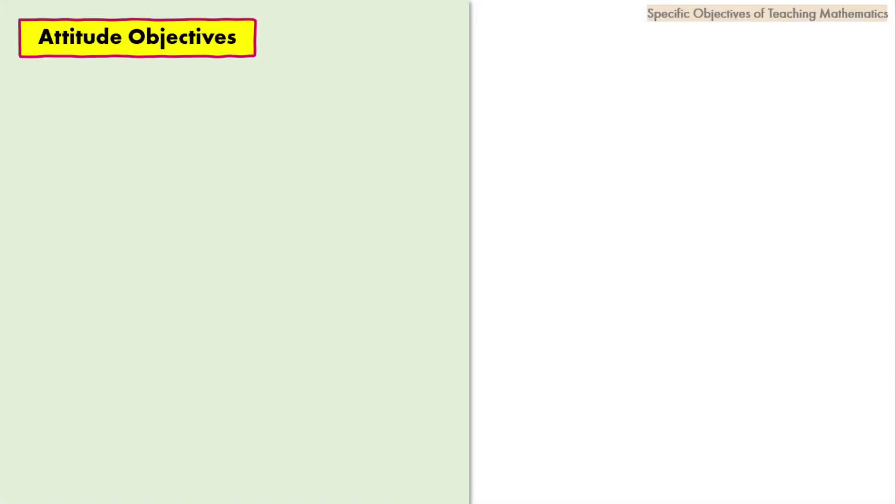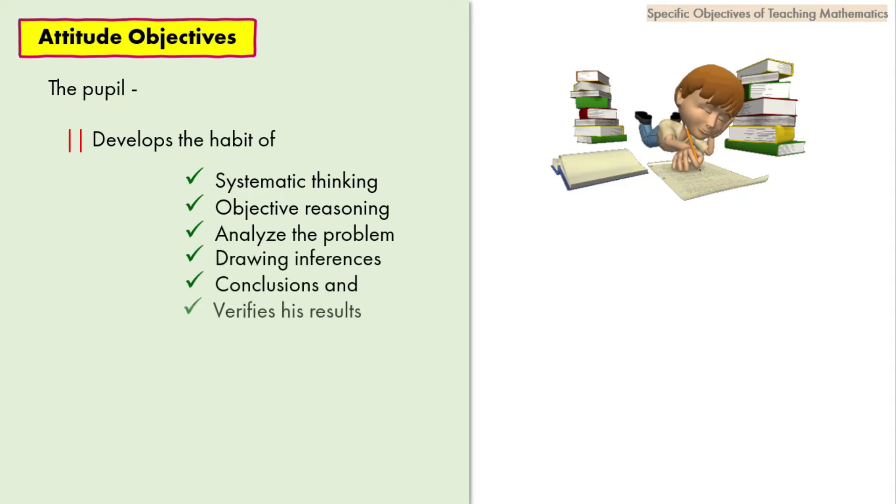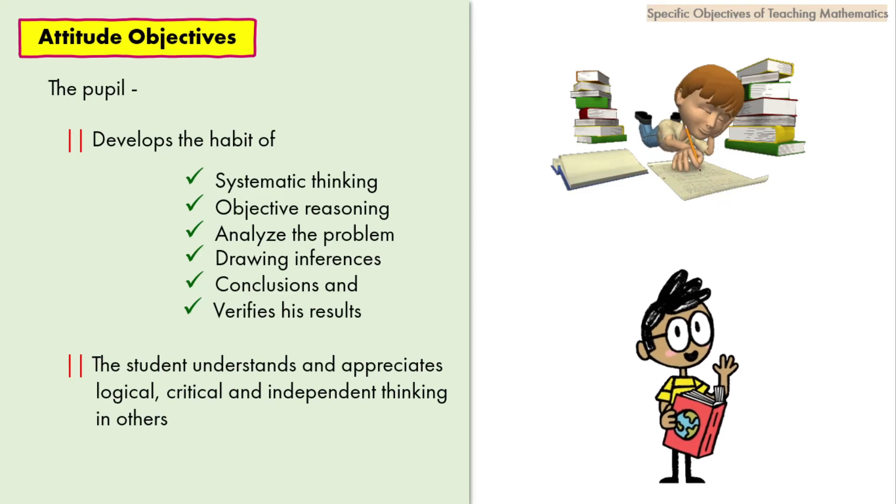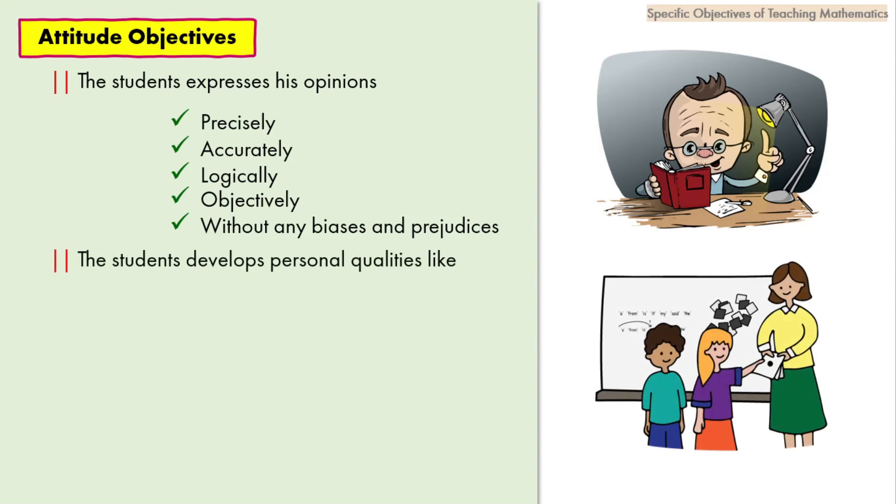Attitude objectives: Here the pupil will be able to develop the habit of systematic thinking, objective reasoning, analyze the problem, drawing inferences and conclusions, and verify results. The student understands and appreciates logical, critical, and independent thinking in others. The student expresses opinions precisely, accurately, logically, objectively, without any biases and prejudices. The student will be able to develop personal qualities like self-confidence, regularity, honesty, objectivity, neatness, and truthfulness. They will be able to develop mathematical perspective and outlook for observing the realm of nature and society.